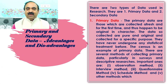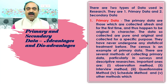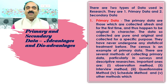There are two types of data used in research. They are: one, primary data, and two, secondary data. The primary data are those which are collected afresh and for the first time, and thus happen to be original in character. The data so collected are pure and original and collected for a specific purpose.